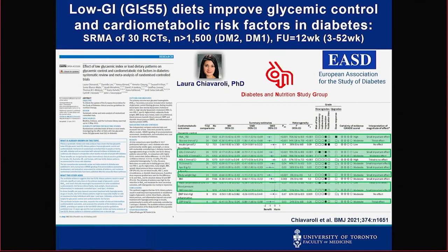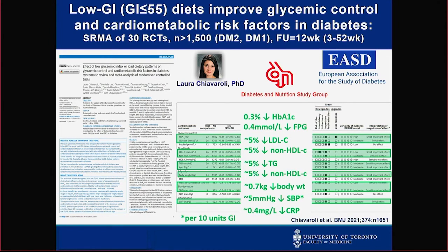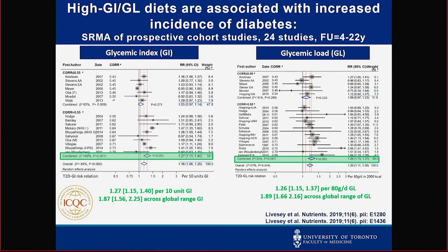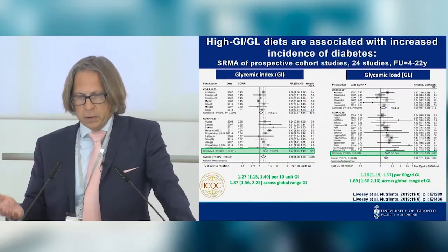This BMJ publication from last year updated the glycemic index/load work from randomized trials, showing improvements in clinically important biomarkers: HbA1c, cholesterol, blood pressure, and inflammation (CRP). The reduction in HbA1c would be considered clinically meaningful — the FDA guidance for new drug development suggests a minimally important difference of 0.3 in HbA1c, and these results would meet FDA requirements. Prospective cohort studies show a similar story: higher risk associated with higher glycemic index and load.